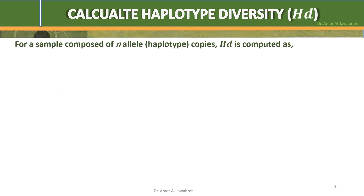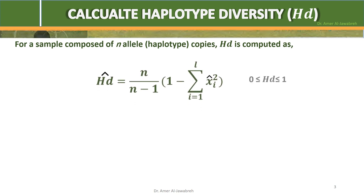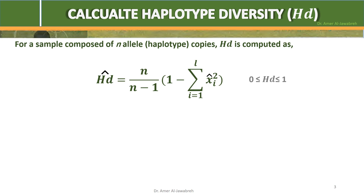Calculate haplotype diversity HD. For a sample composed of N allele copies, HD is computed as: HD-hat equals N over N minus 1, times 1 minus the sum of Xi-hat squared, running from i equals 1 to L.